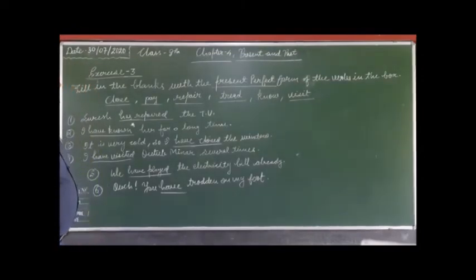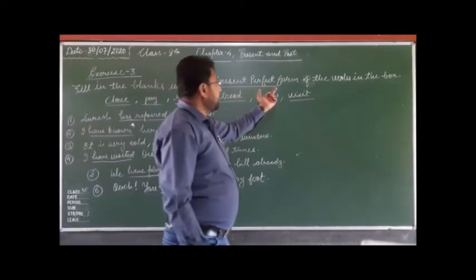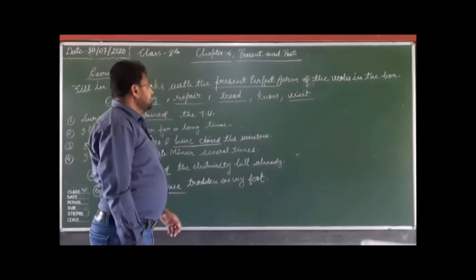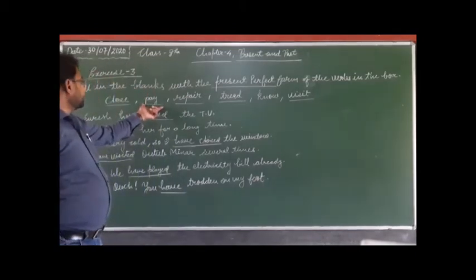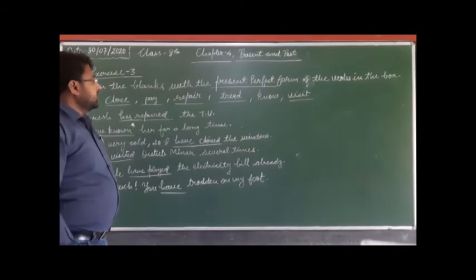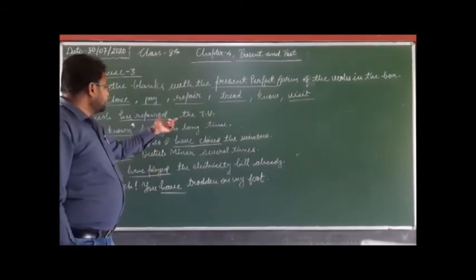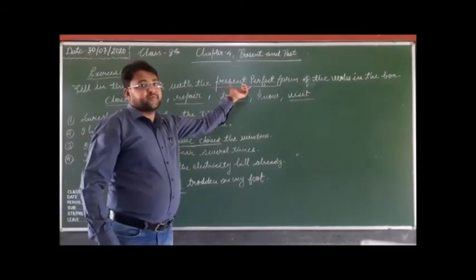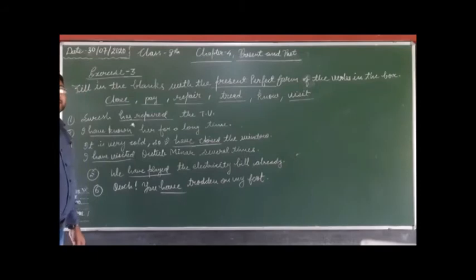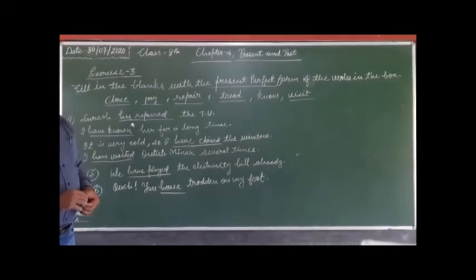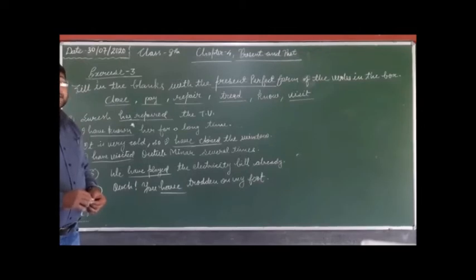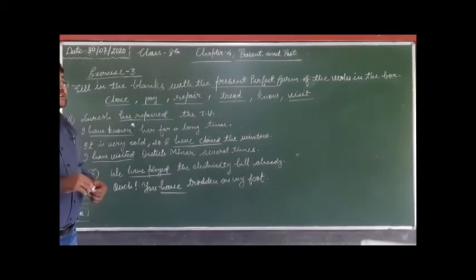Now see exercise 2. This is an exercise to fill in the blanks using present perfect tense, with the verb form given. In present perfect, with a third person singular subject we use 'has', and with first person, second person, and third person plural subjects we use 'have', plus the third form of the verb.